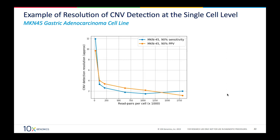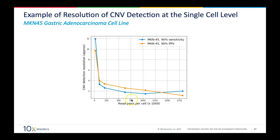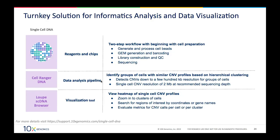As an example, we ran the MKN49 gastric adenocarcinoma cell line, which has a known ground truth, to assess how well our algorithms detect copy number variations. On the x-axis is the number of reads per cell; as reads per cell increases, CNV resolution plateaus at around 2 megabases. As you drop the number of reads, resolution decreases — but even down to 200,000 reads per cell or less, you still have the power to call the expected copy number variations in the MKN cell line.